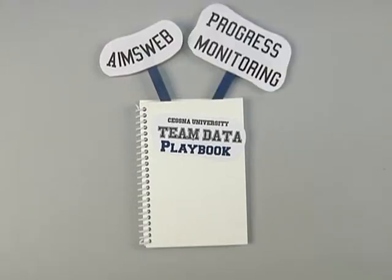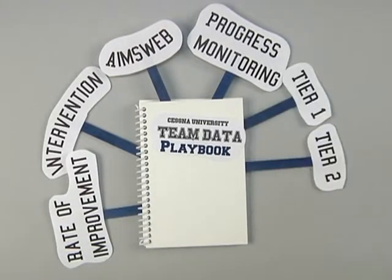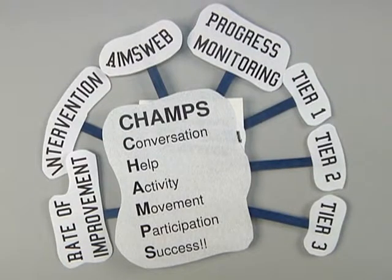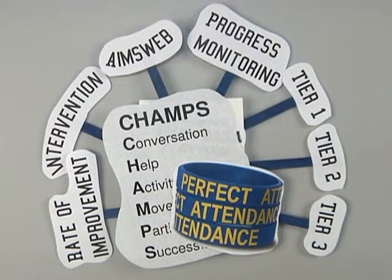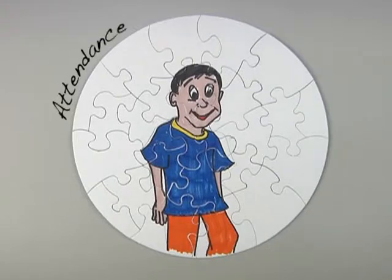Our playbook includes more than just the data on AIMSweb progress monitoring, interventions, rate of improvement, and tier one, two, and three. We're also capturing data about student behavior and attendance. We want you to have a complete picture of how your child is performing, and we know that attendance can have a dramatic effect on student achievement.